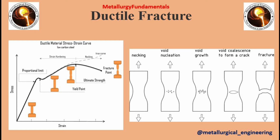A tensile cup and cone fracture originates with many tiny internal fractures called microvoids near the center of the reduced area. These voids occur after the tensile strength has been attained and as the stress or load on the test machine is dropping toward the fracture stress. A ductile fracture starts near the center of the reduced section in tensile loading and then spreads outward toward the surface of the neck-down area.